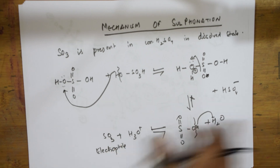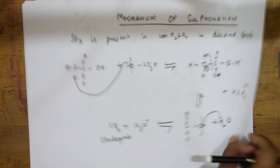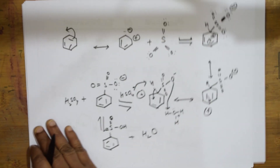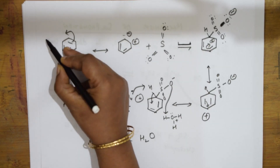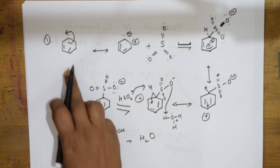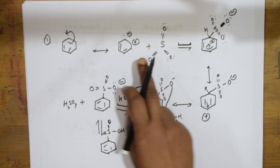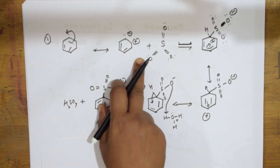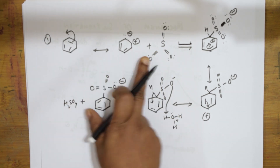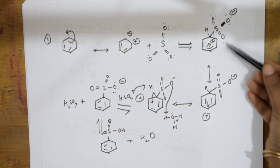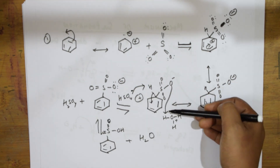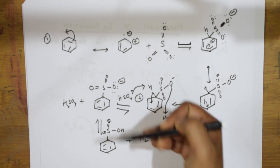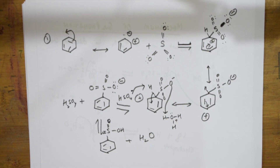To summarize the mechanism: first, SO3 is generated from concentrated sulfuric acid. Then SO3 attacks benzene step-wise through seven steps. This is the complete sulfonation mechanism.